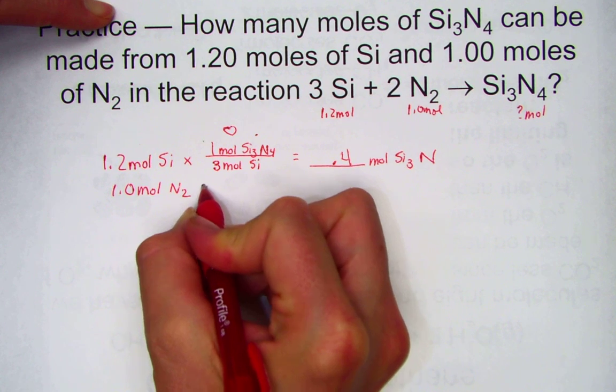Well, let's calculate one-third of 1.2. I get an answer of 0.4 moles. If silicon is the limiting reagent, 0.4 moles would be the maximum yield.